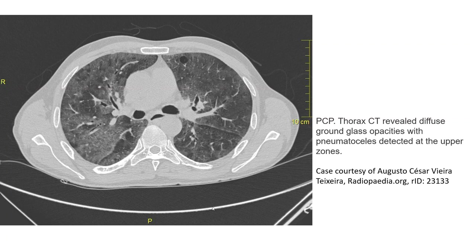This is the case of PCP pneumonia. The CT shows diffuse ground-glass opacity with pneumatocele, predominantly at the upper zone.